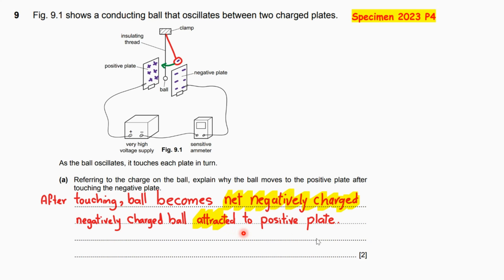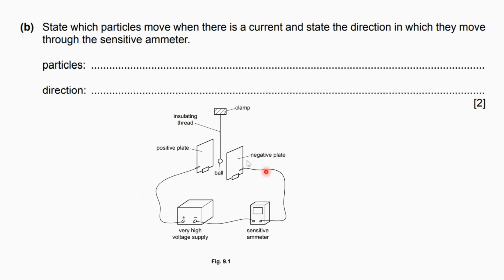For section b, state which particles move when there is a current and state the direction in which they move through the sensitive ammeter.